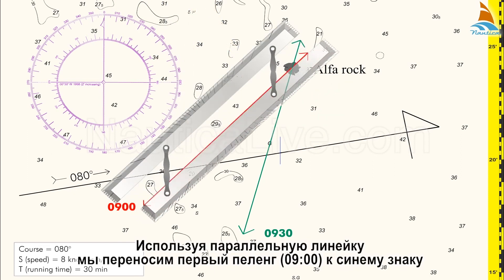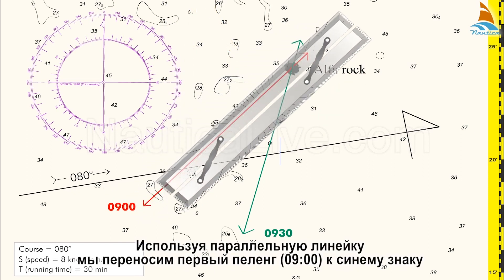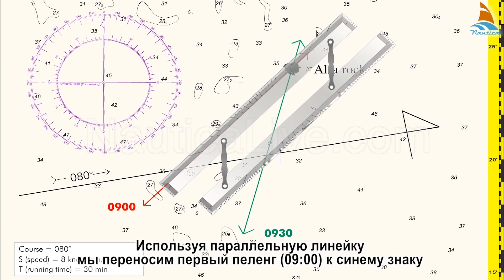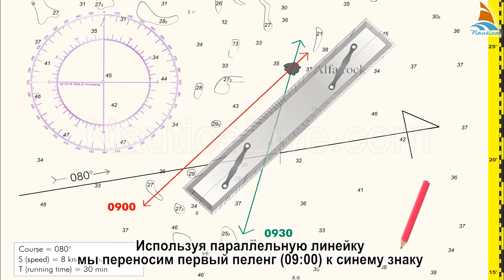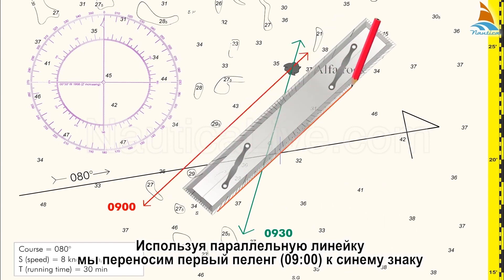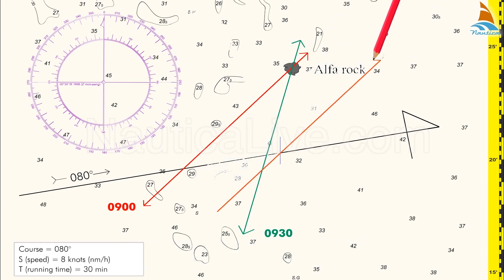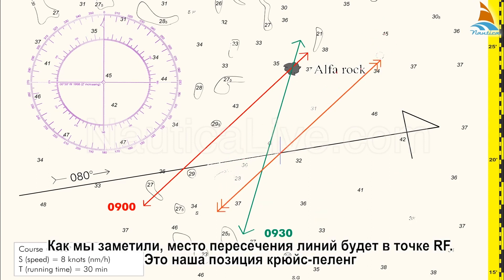Using the parallel ruler, we transfer the 0900 LOP to the blue mark. As we notice, the two LOPs intercept at the point RF. This is our running fix position.